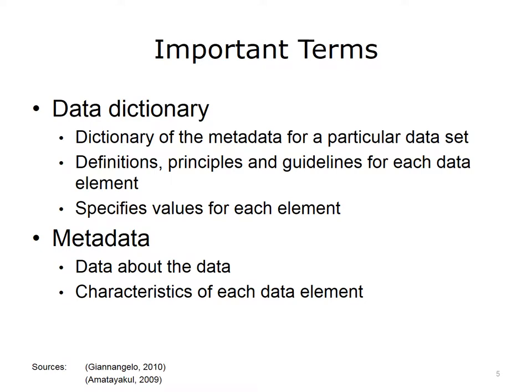For each data element, the data dictionary contains information such as the definition, principles, and guidelines, the values, format, and synonyms. The specification for the values will include how many characters are in the data field, and whether the characters use letters from the alphabet, numbers, or alphanumeric — which would use both numbers and alphabet letters.